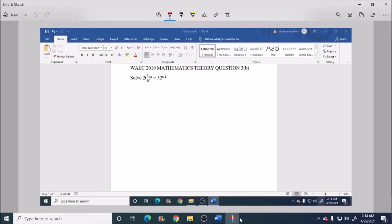Hello and welcome. Today I will be answering WAEC 2019 Mathematics Theory Question Number 3B. Solve 2 into 1 over 8 bracket close raised to power x equal to 32 raised to the power of x minus 1. Okay, so let's begin solving.